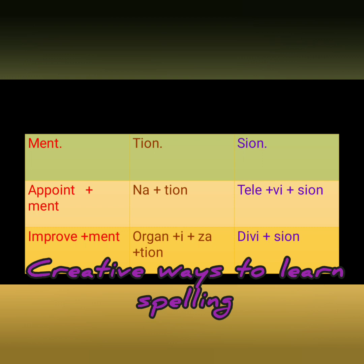In the next column: 'tion' — 'nation' becomes 'nation'; 'organ' plus 'iz' plus 'a' plus 'tion' gives 'organization'. In the last column: 'tele' plus 'vi' plus 'sion' gives 'television'; 'di' plus 'vi' plus 'sion' gives 'division'. This is how students can split words and try to learn spellings by breaking them into different small parts.